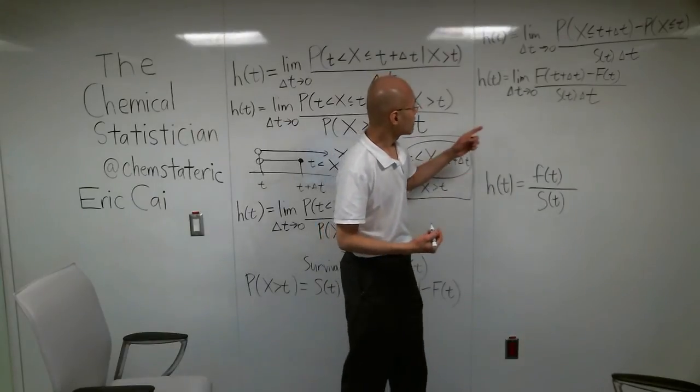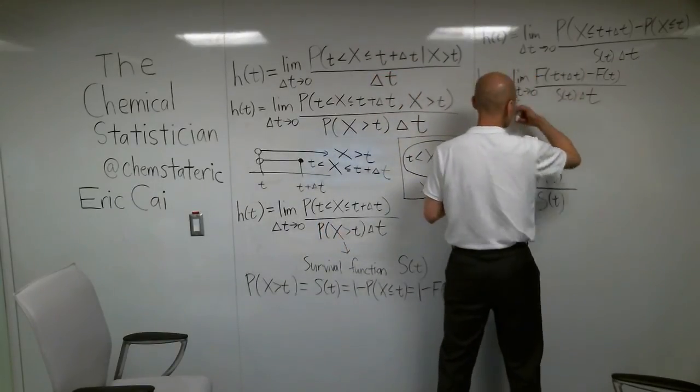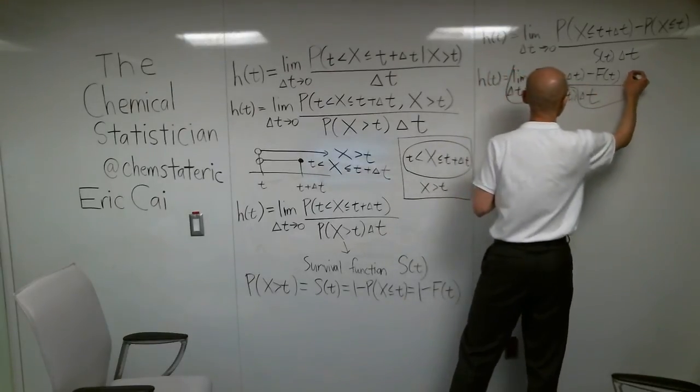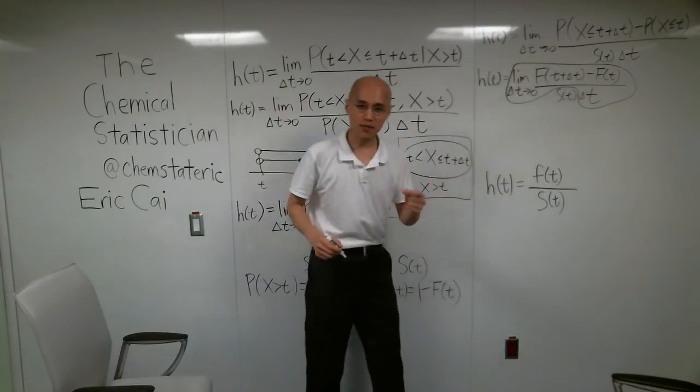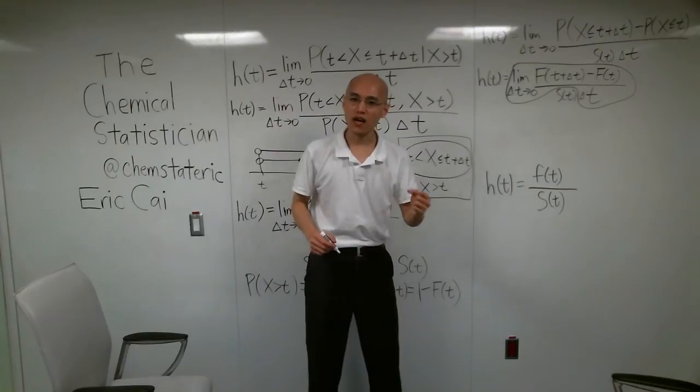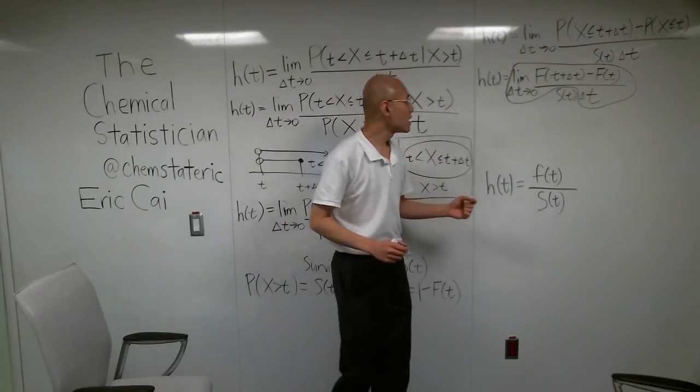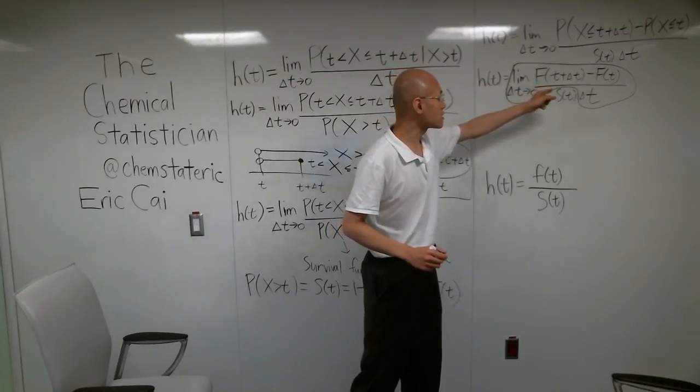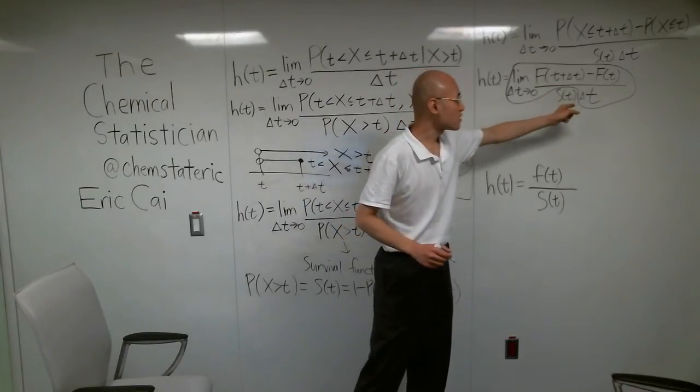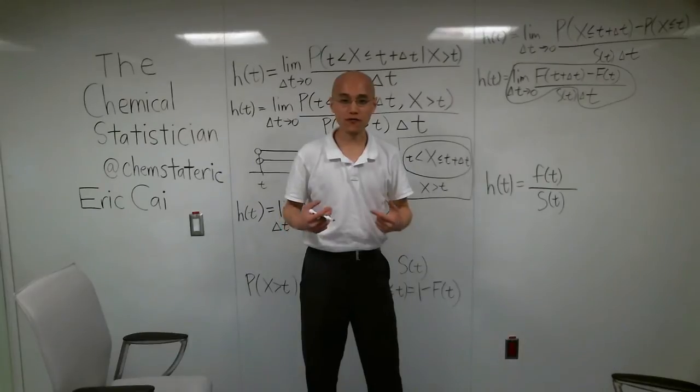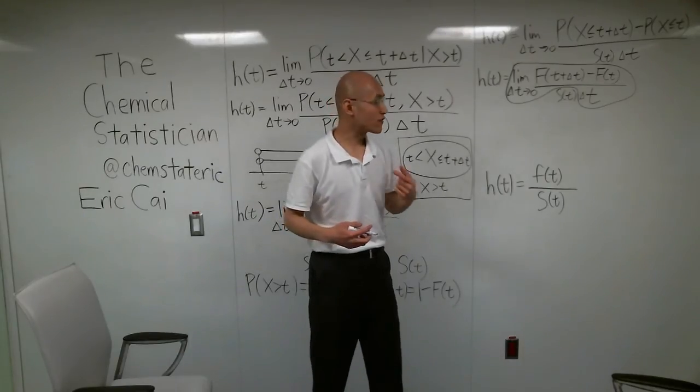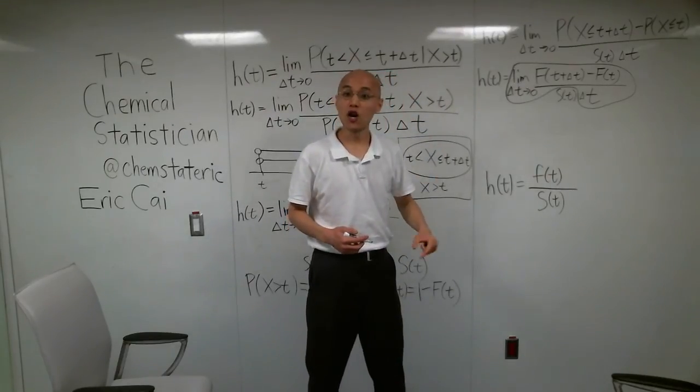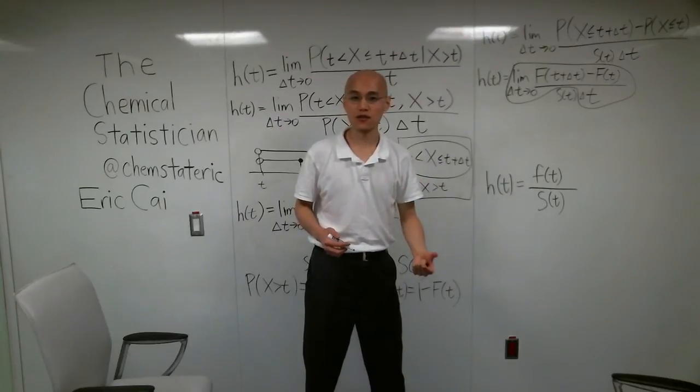If you notice, this whole fraction, this whole expression right here, excluding the survival function, is quite simply the definition of the derivative of the CDF. It is the limit, as delta t goes to zero, of the CDF evaluated at t plus delta t minus the CDF at t, all divided by delta t. If you go back to first year calculus, on the definition of the derivative, that is exactly the definition of the derivative applied to the CDF, which, of course, is the probability density function, or PDF.